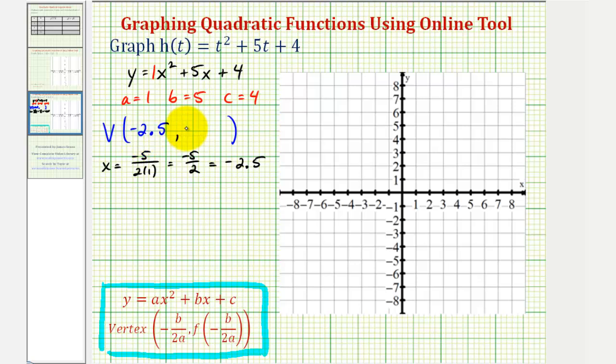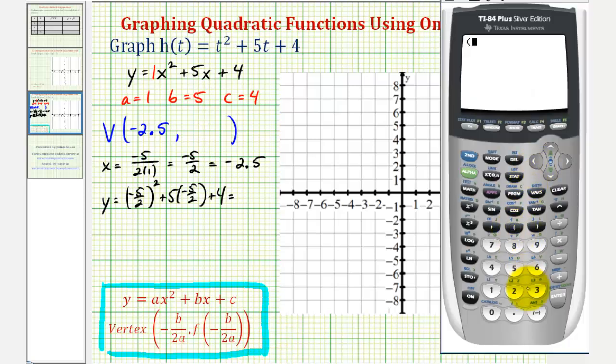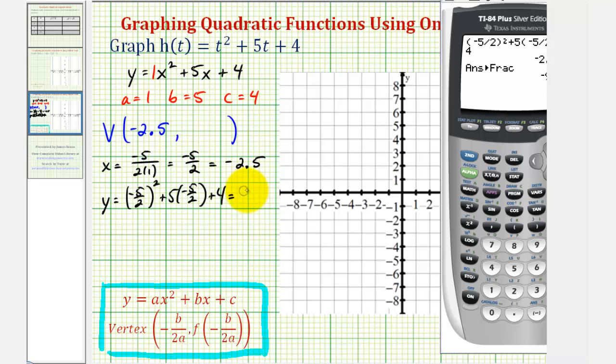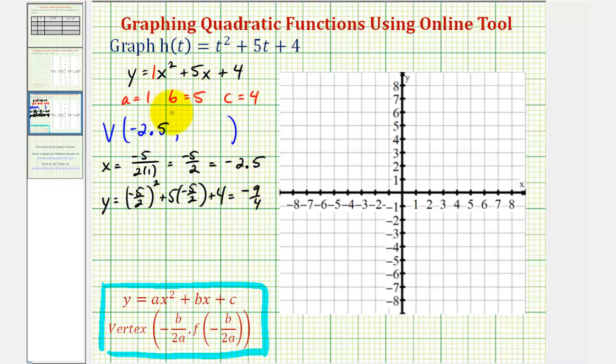Since this point is on the graph, to find the y-coordinate, we'll now substitute negative 2.5, or negative 5 halves, for x, which would give us y equals negative 5 halves squared plus 5 times negative 5 halves plus 4. Let's evaluate this on the calculator. The decimal value is negative 2.25. To get the fraction value, we'll press math, enter, enter. So negative 9 fourths for the y-coordinate, or negative 2.25.